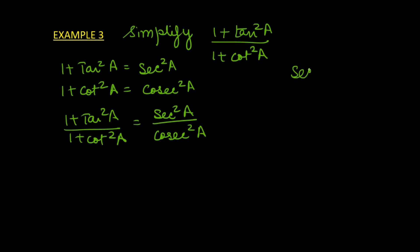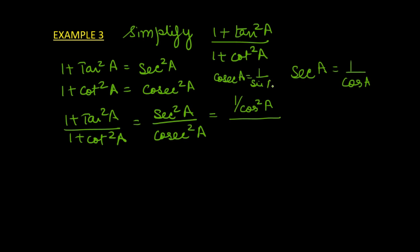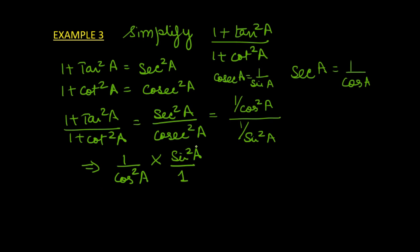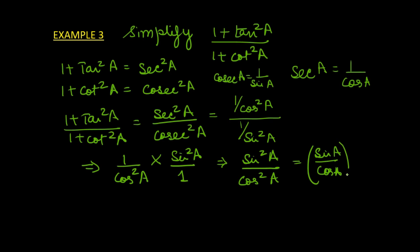We know secant A is the reciprocal of cosine A, so sec²A can be written as 1 over cos²A. And cosec A is the reciprocal of sine A, so cosec²A can be written as 1 over sin²A. When there is a fraction in the denominator, we keep the numerator as-is, multiply, and reciprocate the denominator. This gives us sin²A over cos²A, which equals (sin A over cos A)², and since sin A over cos A is tan A, it becomes tan²A.